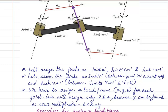We have to assign a local frame for each joint. We will assign only the x and z axes, because y can be found as a cross multiplication of z and x. Cross multiplication of two vectors gives a product in the direction perpendicular to both vectors. So x and z must always be 90 degrees to each other, and y must be 90 degrees to both x and z. We use z cross x to find y, so we will only draw x and z axes for each local frame.